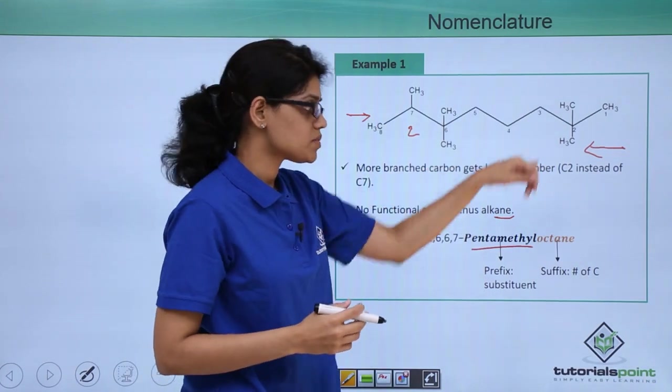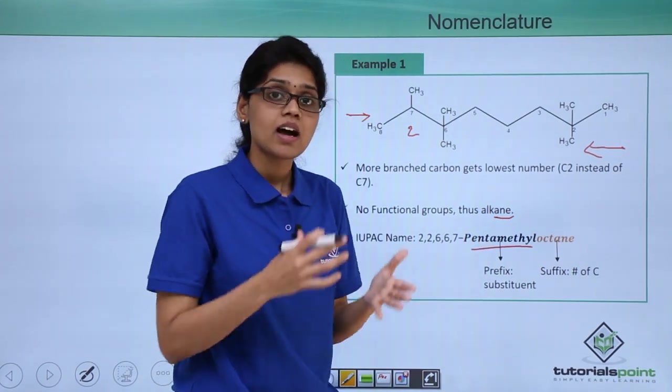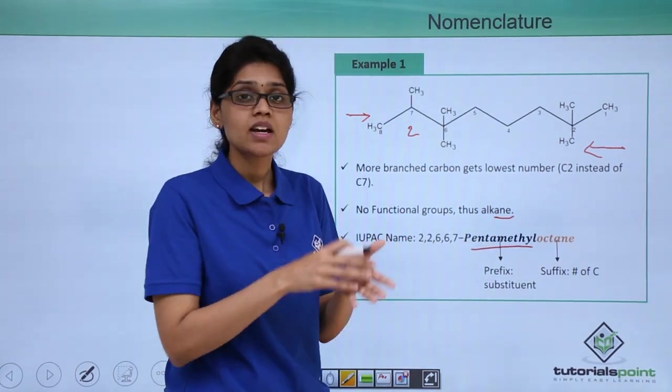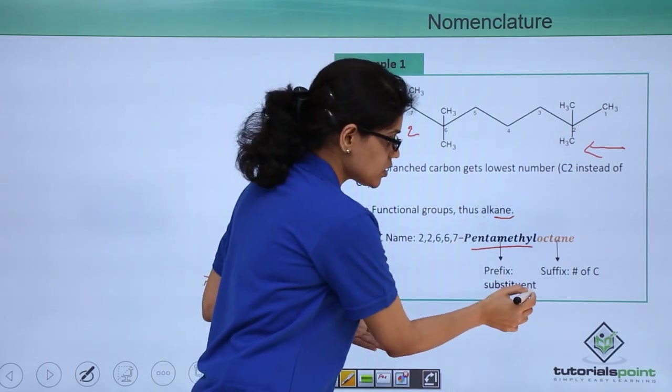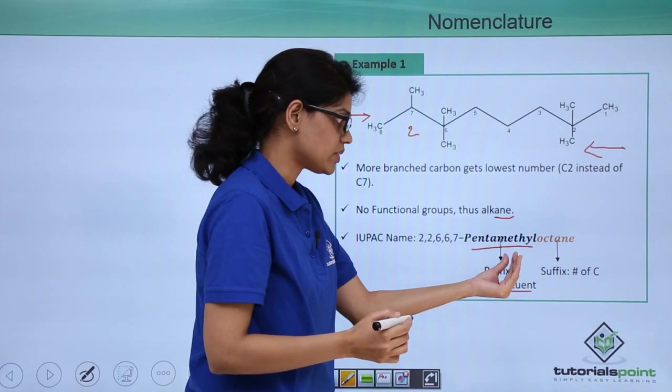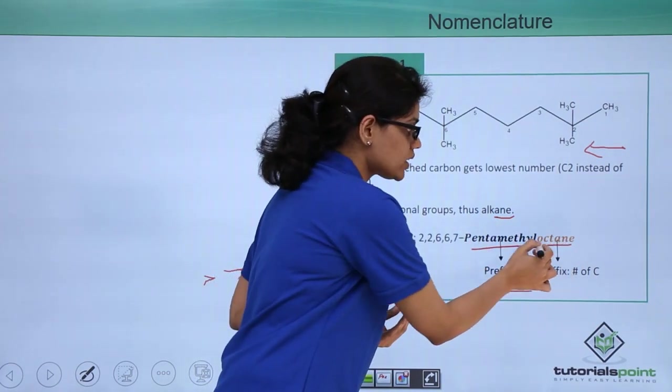Because you have 5 methyl substituents that will become pentamethyl, and from nomenclature we remember that the prefix part will constitute your substituent. So this will be your substituent 2,2,6,6,7-pentamethyloctane.